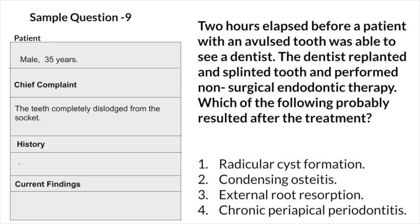Question 9: Patient, male, 35 years, chief complaint teeth completely dislodged from the socket. Two hours elapsed before a patient with an avulsed tooth was able to see a dentist. The dentist replanted and splinted the tooth and performed non-surgical endodontic therapy. Which of the following probably resulted after the treatment? Radicular cyst formation, condensing osteitis, external root resorption, or chronic periapical periodontitis? Answer: external root resorption. The most important factor in managing avulsed teeth is maintenance of vitality of periodontal ligament fragments attached to the root. Excessive extra-oral time has been shown to result in necrosis of periodontal fragments.